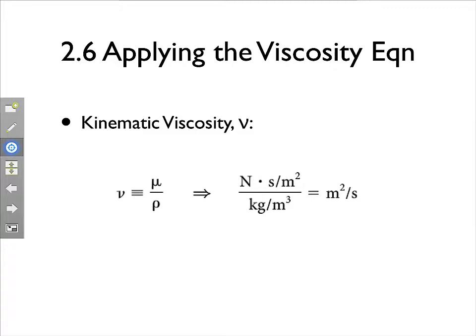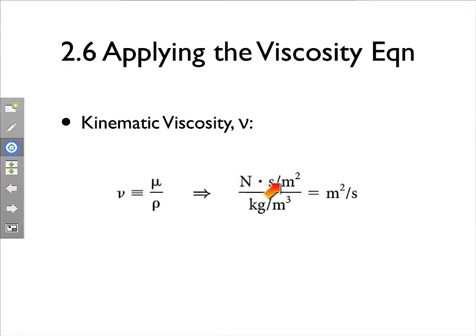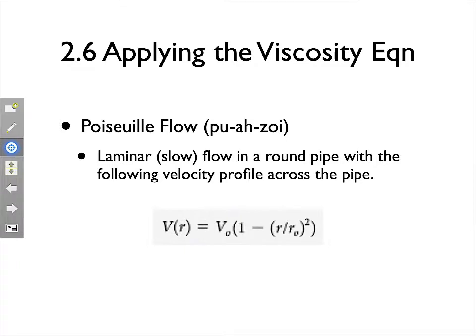You might wonder why we have two different definitions of viscosity - both dynamic and kinematic. The reason is that in many fluid dynamics equations, this ratio of mu over the density occurs frequently. In tables, even in the back of your book, you'll see both dynamic and kinematic viscosities listed for fluids like water or oil. Remember: dynamic viscosity mu has units of Newton seconds over meters squared; kinematic viscosity has units of meters squared over seconds.